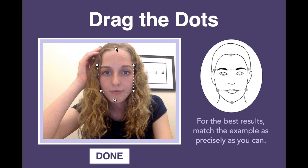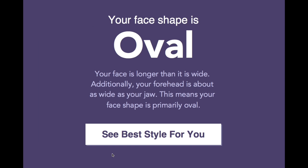I'm going to help it out a little bit and match the image on the right as closely as I can. It will use the relationships between those six points on my face to determine what my primary face shape is.